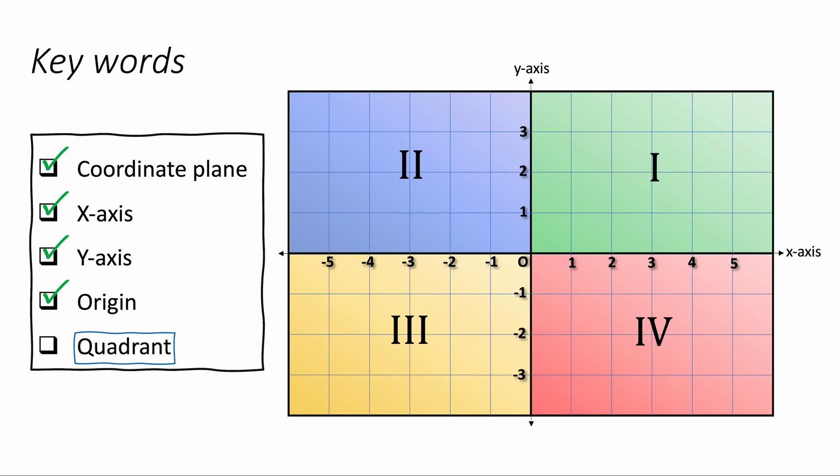And then we have four quadrants. These are the four quadrants labeled here, which split up the coordinate plane into four equal quarters, four equal quadrants.